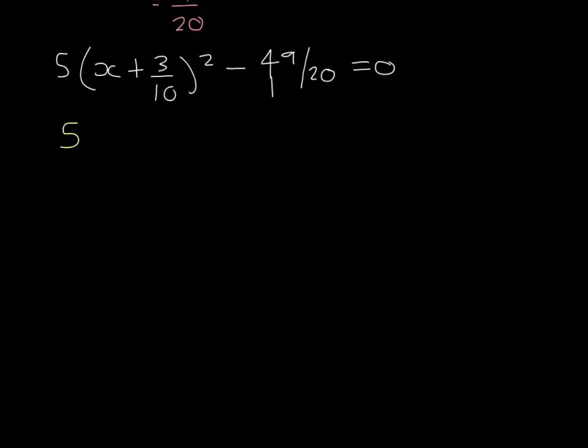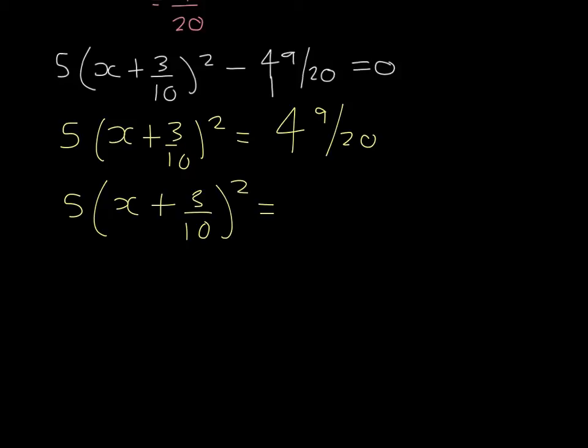So we then have 5 x plus 3 tenths squared equals 4 and 9 20ths. And what we're going to do is write the right hand side, the 4 and the 9 20ths as a top heavy or improper fraction. So this would be 89 over 20.